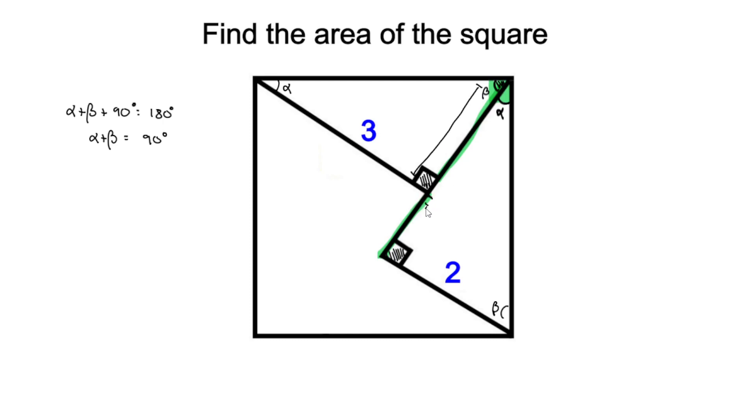So we can conclude that this part right here would be the difference between the long side and the shorter side that form the right angle. So 3 minus 2, it would be 1.